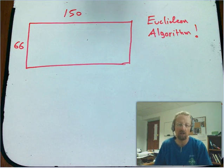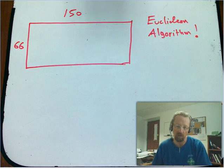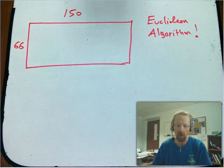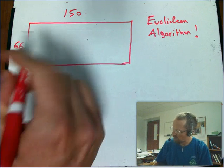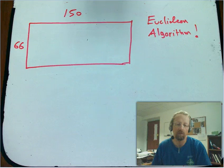They don't connect it to finding the greatest common divisor of two integers until the second section. And I want to go ahead and give that away, talk about it in those terms. So we've got 150 and 66, and what would be a good way to find the greatest common divisor of those two?